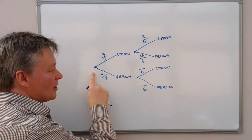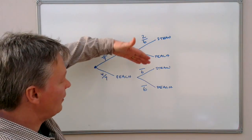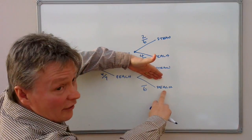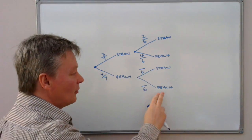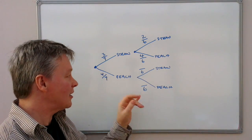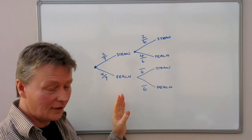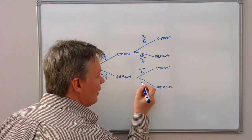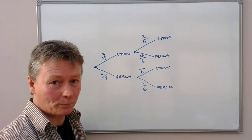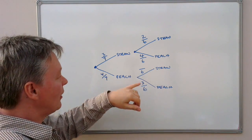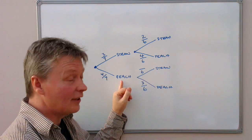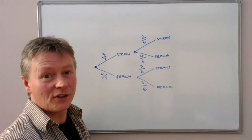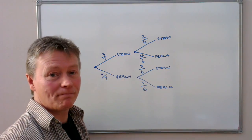Let's look at the other branch — suppose the second time round she picks out a peach yogurt. If she picks peach again, there were four and now there are three, so the probability is three out of six. If she picks peach the first time, the three strawberries remain untouched, so the probability of strawberry the second time is three out of six.